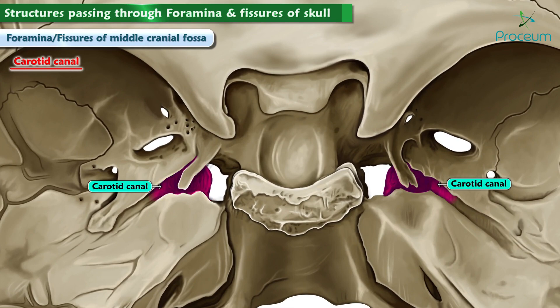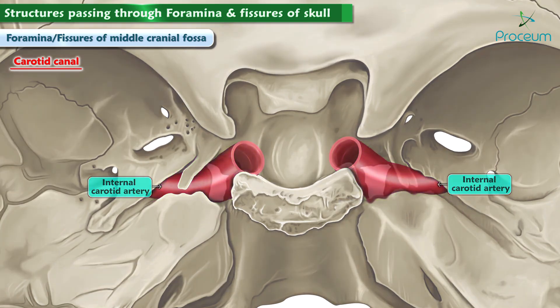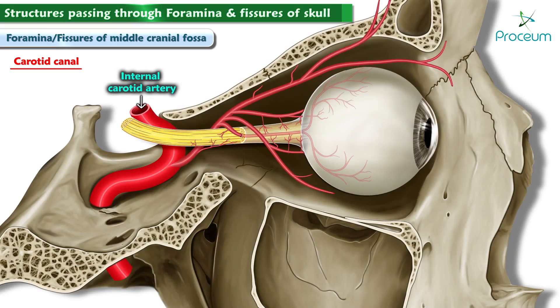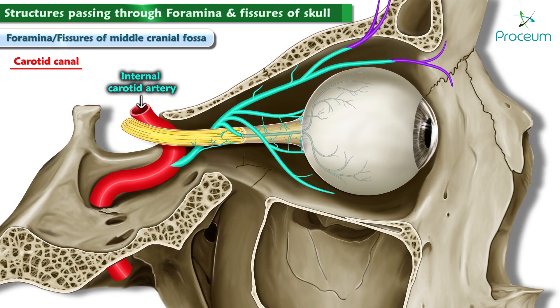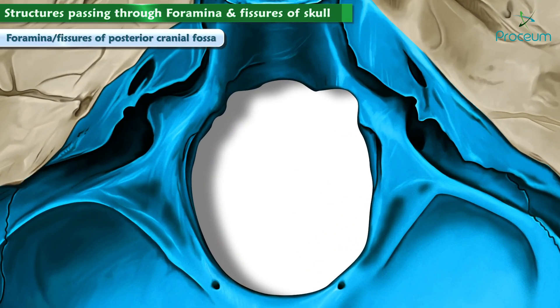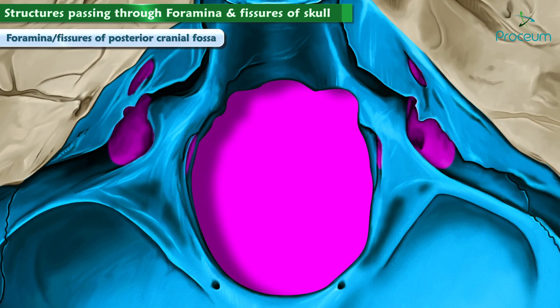The carotid canal lies posterior and lateral to the foramen lacerum. It allows the internal carotid artery — one of the major blood supplies to the brain — to enter the skull. Branches of the internal carotid also supply blood to the eye, the contents of the orbit, and the forehead. In the posterior cranial fossa there are four main foramina, which we will list in order of the cranial nerves that enter and exit through them.